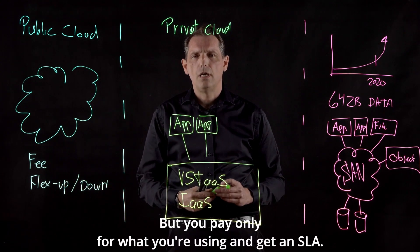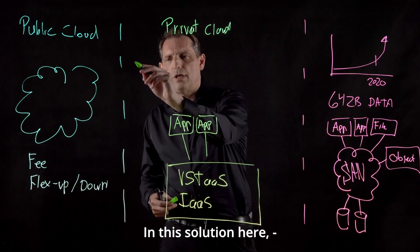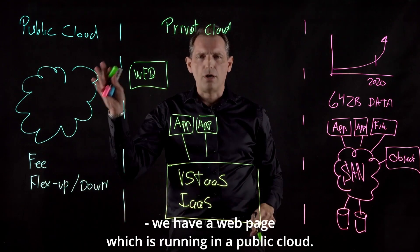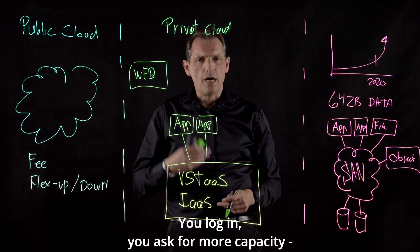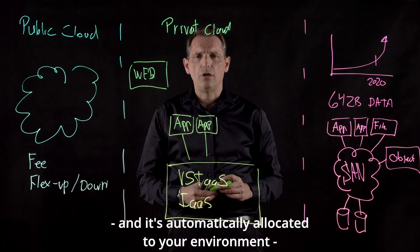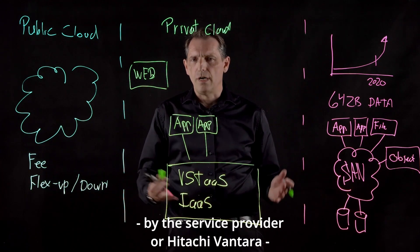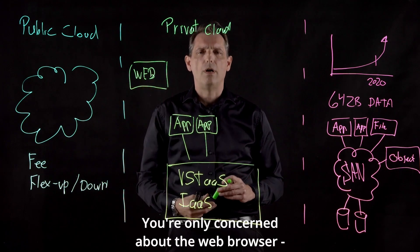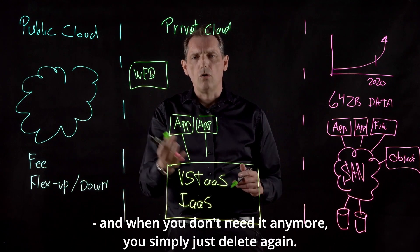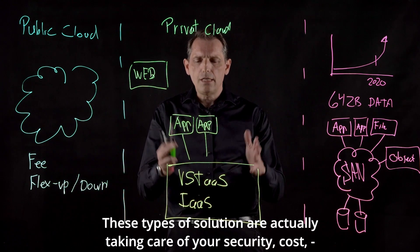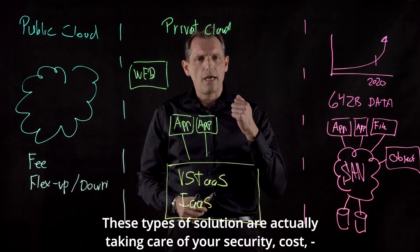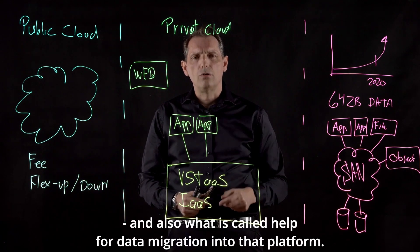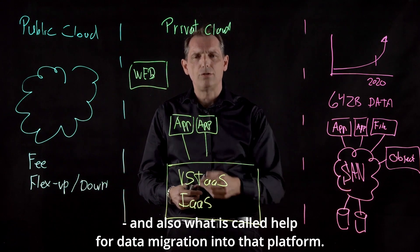You pay only for what you're using and you get an SLA. This solution includes a web portal running in public cloud. You log in, ask for more capacity, and it is automatically allocated to your environment by the partner, service provider, or Hitachi Vantara. You only need to concern yourself with the web browser — when you need things and when you don't need them anymore, you simply delete them. These types of solutions take care of your security, cost, performance, manageability, and also help with data migration into the platform. It actually goes beyond the public cloud model by giving you these extra capabilities.